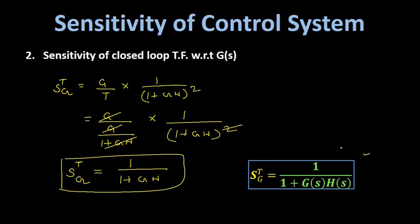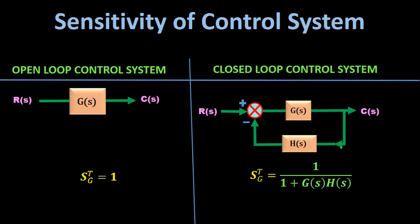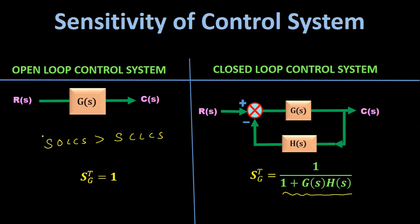Comparing the two results: for the open loop control system, sensitivity equals 1 (100%), and for the closed loop control system, sensitivity equals 1/(1+G(s)·H(s)). The sensitivity of the closed loop system is reduced by a factor of 1+G(s)·H(s). Therefore, the sensitivity of open loop control systems is greater than the sensitivity of closed loop control systems.